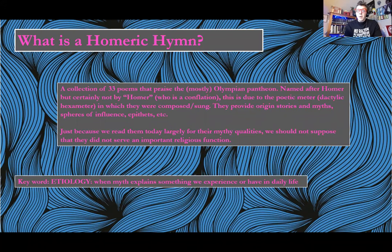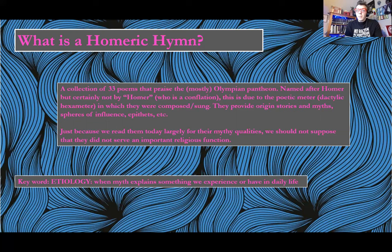The name Homeric comes from Homer, the ascribed author of the Iliad and the Odyssey. But these texts are certainly not by Homer because Homer never existed — it's a conflation. It's a term given to these poems that were produced over generations and hundreds of years by a number of different composers and poets before finally being ascribed to a Homer. The reason they use Homeric is because of the poetic meter in which the Greek is written — it's called the Dactylic Hexameter. These would have been sung for hundreds of years before they were written down, in the nature of oral poetry transitioning to written textual poetry.